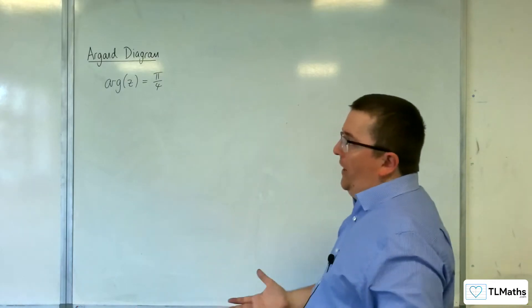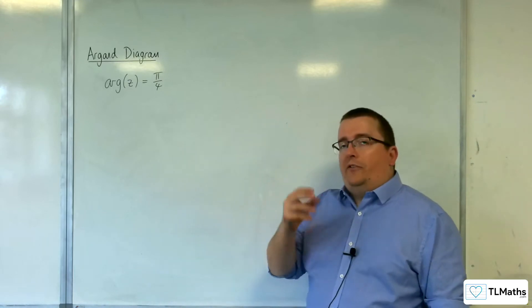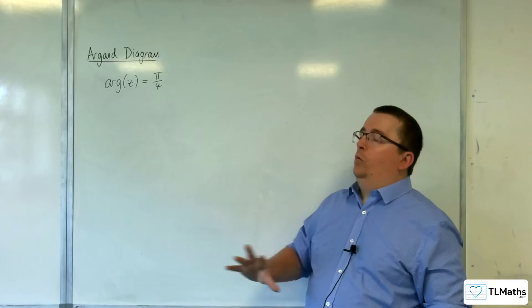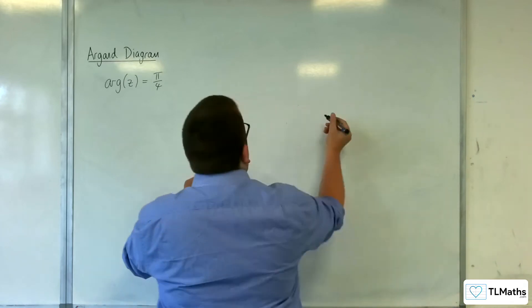Now we understand what it means to say that the argument of a complex number is pi over 4. That's saying that the angle that the complex number makes with the positive real axis is pi over 4. So let's visualize it.